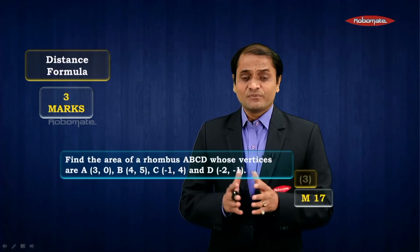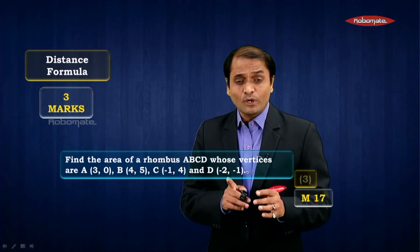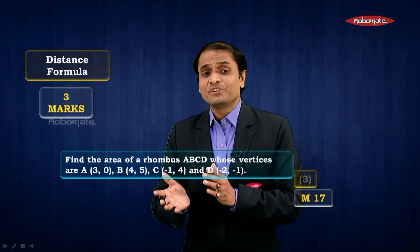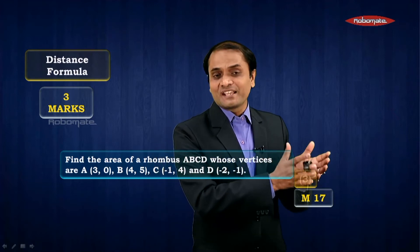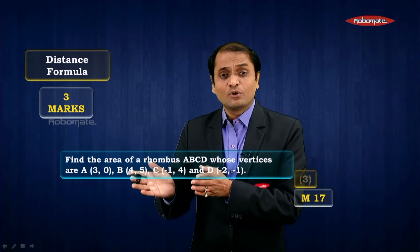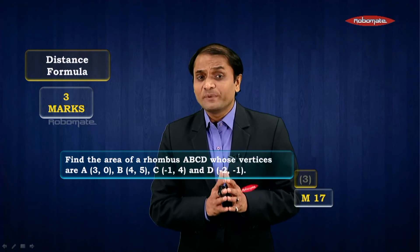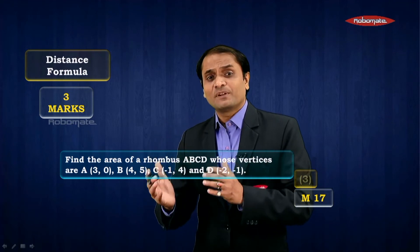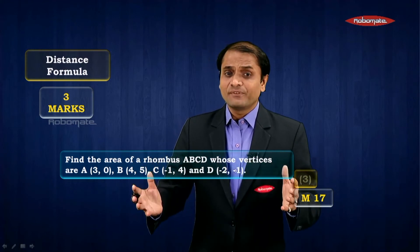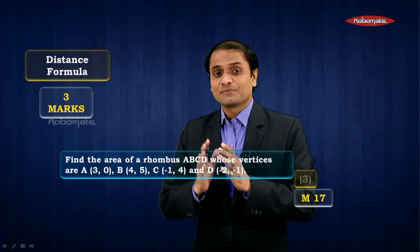One more sum is where they say find the area of the rhombus formed by four given points. You should know the formula for area of rhombus, which is half times the first diagonal times the second diagonal. By distance formula, find the length of AC (the first diagonal), then find the length of BD (the second diagonal), and then apply the formula for area of rhombus. These are the different types of sums which they could ask from distance formula.